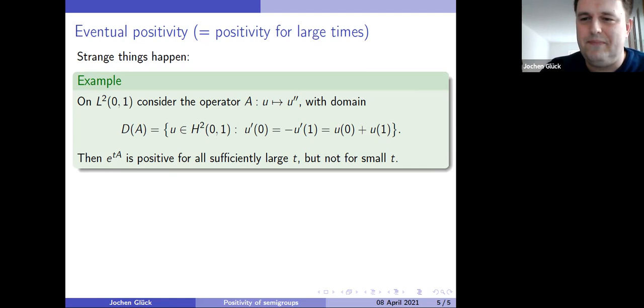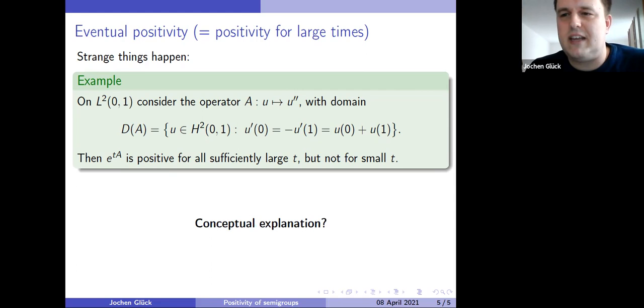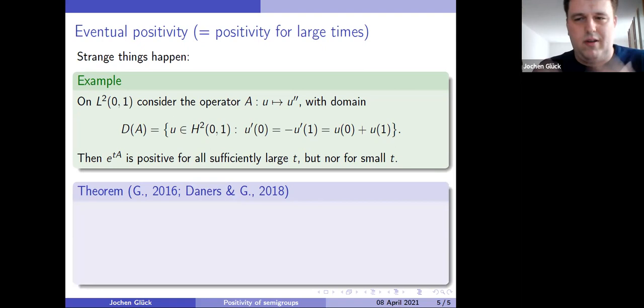Now, that's kind of strange, I think, at least if you're not used to it. So a conceptual explanation would be nice, and also an explanation of how one can prove this. Non-positivity follows from the Beurling-Deny criterion, but positivity for large time, how to prove it? Here is one theorem, and it's just a very simplified example to state it in a very concise manner. More general things are known. This is due to Daniel Daners and myself.